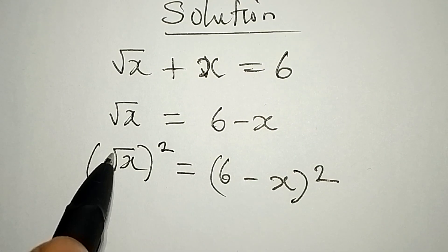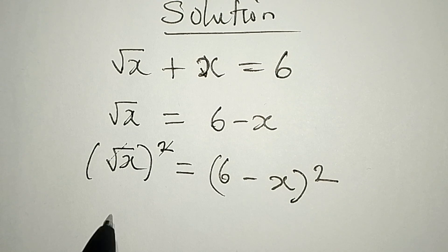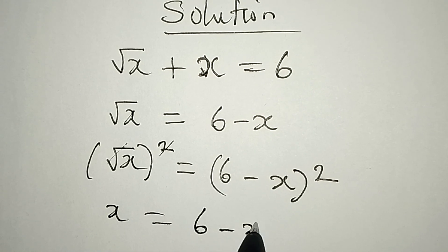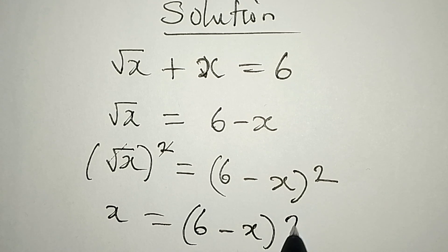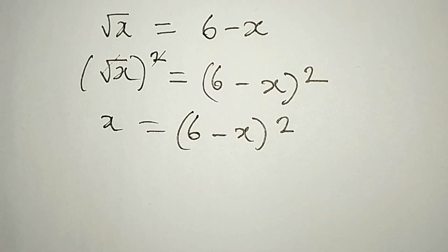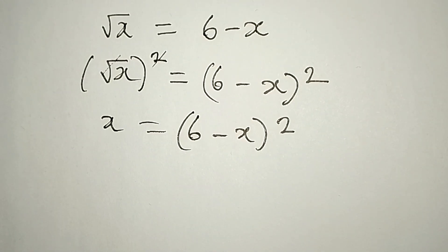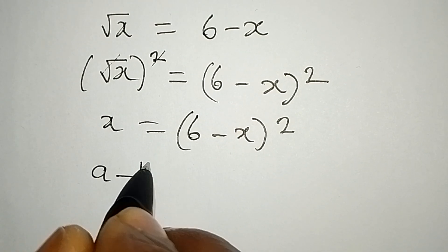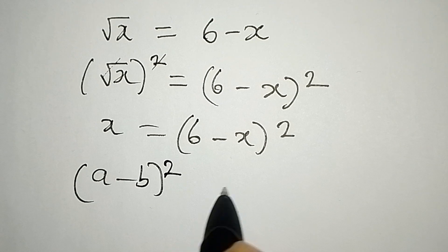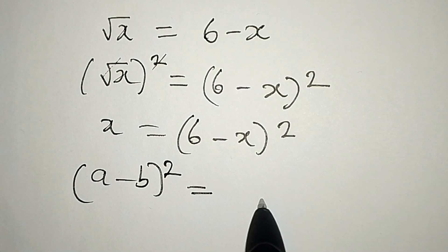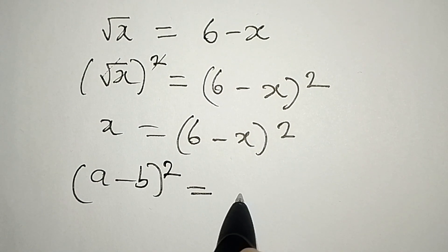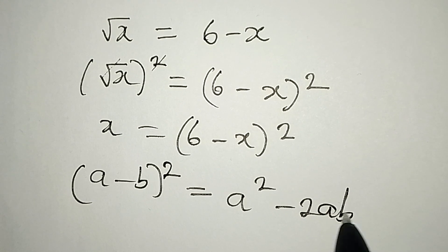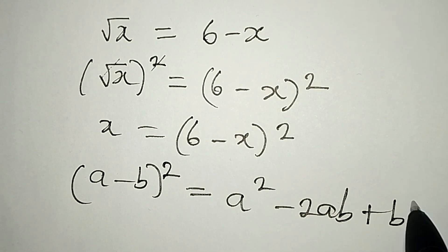I'm going to square this side so I can equally square this side. This will eliminate the square root and now x = (6 - x)². Remember that if you have (a - b)² it is the same as a² - 2ab + b².